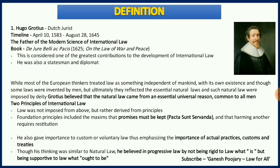The three names are Hugo Grotius, Jeremy Bentham, and Oppenheim. Hugo Grotius is very important because he is the father of modern science of international law. He wrote a book called De Jure Belli ac Pacis, which in English means 'On the Law of War and Peace.' This book is one of the greatest contributions to the development of international law. He was not just a jurist but also a statesman and diplomat, giving him a clear perception of international law.